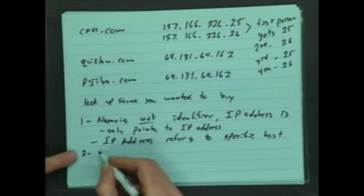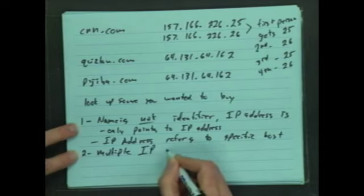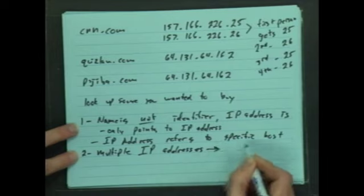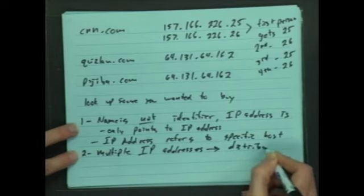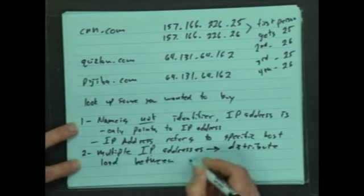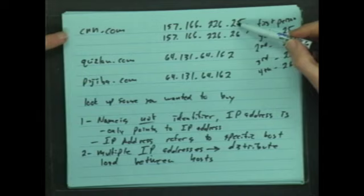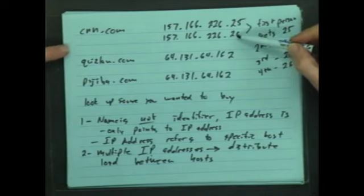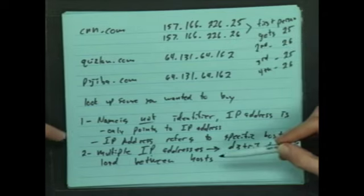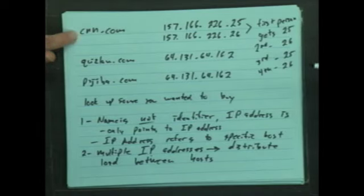So that's our lesson number two. If we have multiple IP addresses, then we are going to distribute the load between or across those hosts. This is basically a load balancing scheme. So sometimes CNN wants you to use this server, sometimes they want you to use this server. And basically it means if a hundred people connect to CNN.com, half of them go here, and the other half go here. And so they can use multiple servers with the same name on it. Distributes their load.